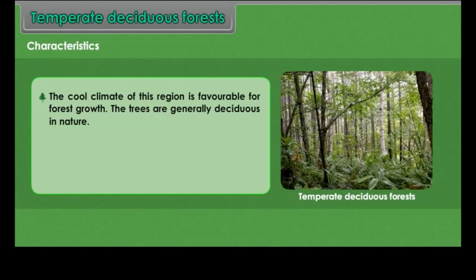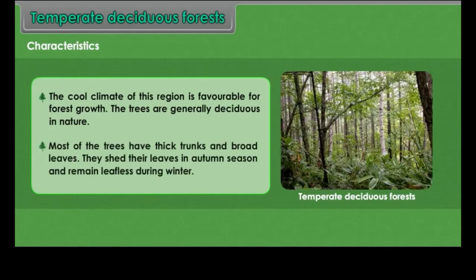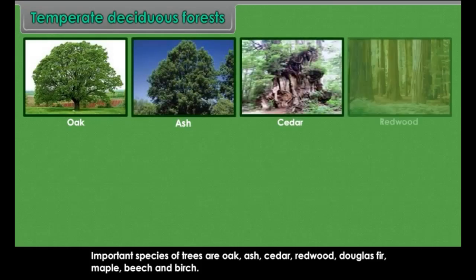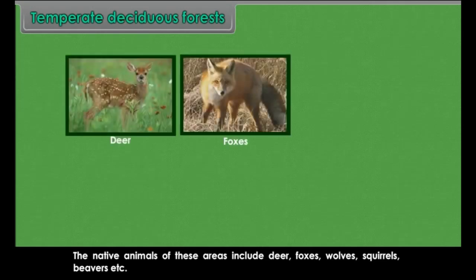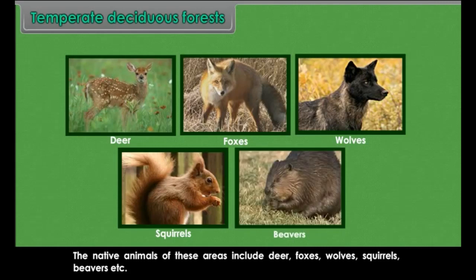Characteristics: The cool climate of this region is favourable for forest growth. The trees are generally deciduous in nature with thick trunks and broad leaves. They shed their leaves in autumn and remain leafless during winter. Important species of trees are oak, ash, cedar, redwood, douglas fir, maple, beech and birch. The native animals of these areas include deer, foxes, wolves, squirrels and beavers.